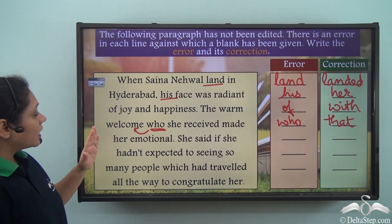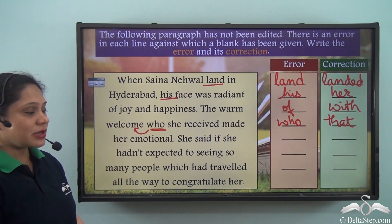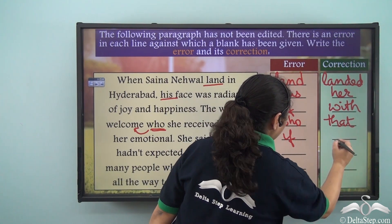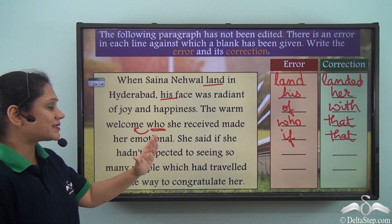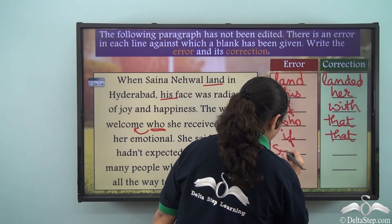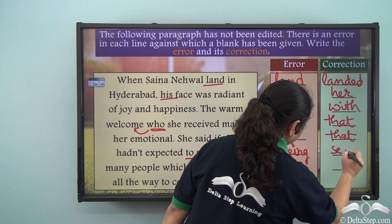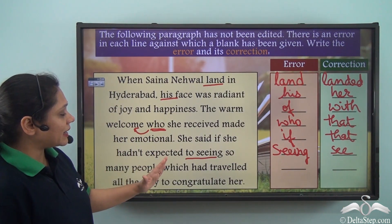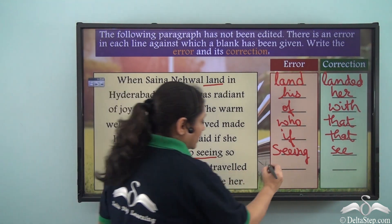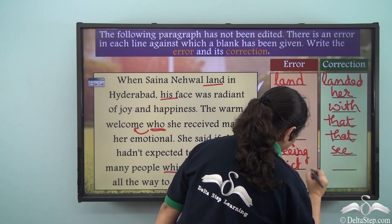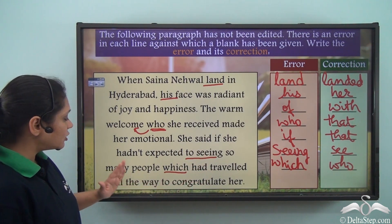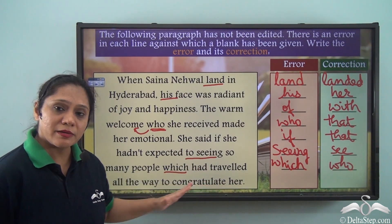The warm welcome that she received made her emotional. She said that she hadn't expected to see — 'to seeing' is not correct, so instead of 'seeing' it should be 'see'. 'So many people which had travelled' — 'which' is referring to people, so instead of 'which' we have to write 'who'. So many people who had travelled all the way to congratulate her — there is no error in the last line.